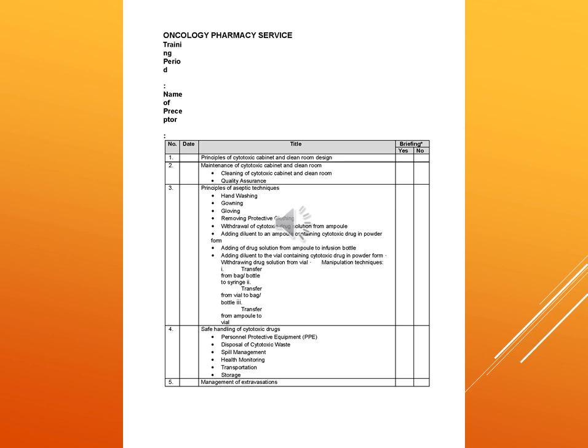Oncology pharmacy services have a training period of 2 weeks, in which the name of the preceptor must be mentioned. There are different tasks for CRP which include principles of cytotoxic cabinet and clean room design, maintenance of cytotoxic cabinet and clean room — which covers cleaning of the cytotoxic cabinet and clean room — and quality assurance.